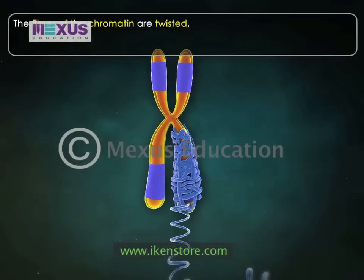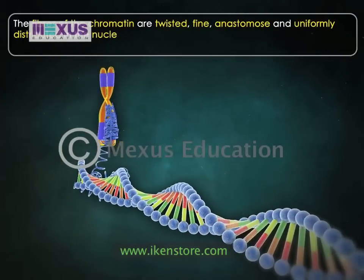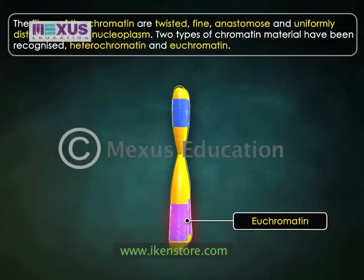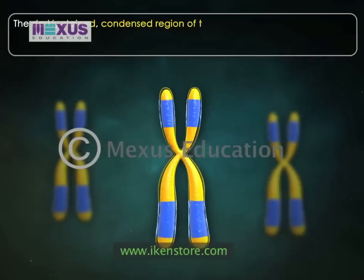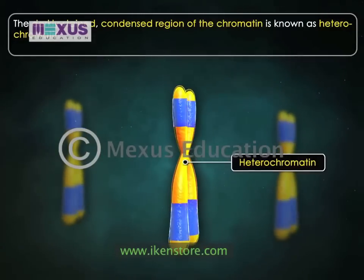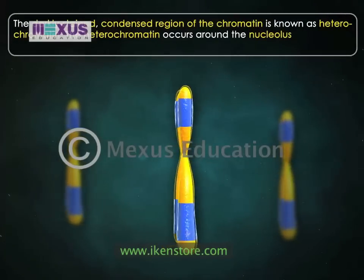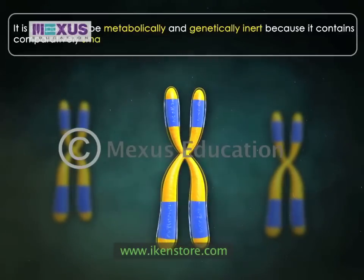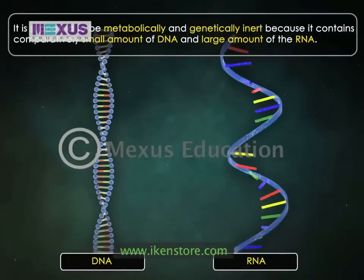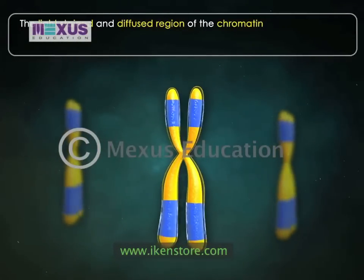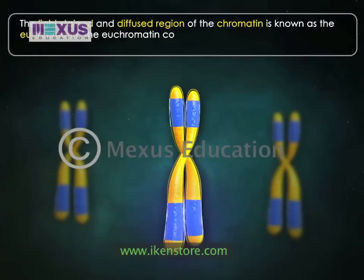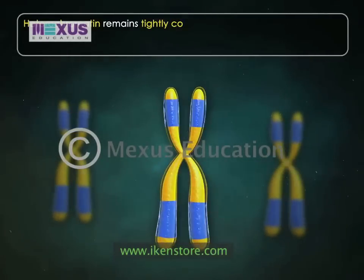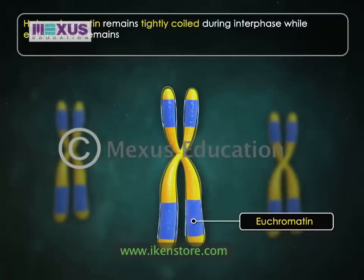The fibers of the chromatin are twisted, fine, anastomose, and uniformly distributed in the nucleoplasm. Two types of chromatin material have been recognized: heterochromatin and euchromatin. The darkly stained, condensed region is known as heterochromatin. It occurs around the nucleus and at the periphery, and is supposed to be metabolically and genetically inert because it contains comparatively small amounts of DNA and a large amount of RNA. The light stained and diffused region is known as euchromatin, which contains comparatively large amounts of DNA. Heterochromatin remains tightly coiled during interphase while euchromatin remains loosely coiled, forming a network.